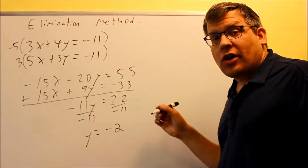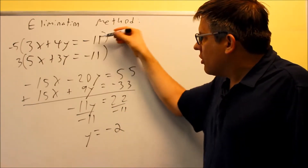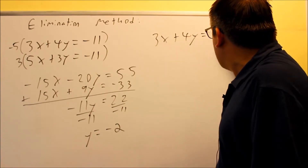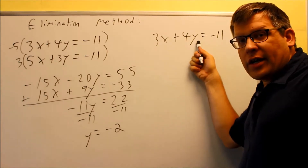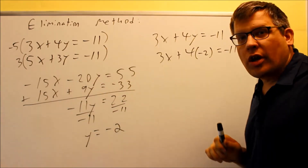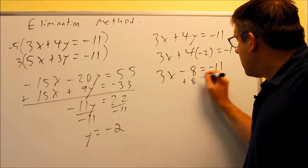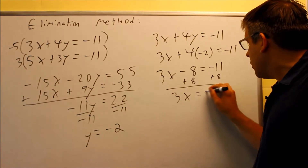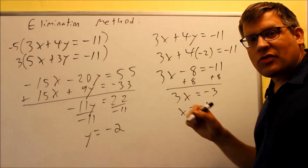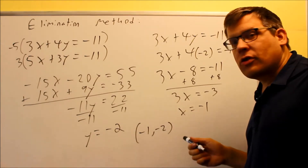Now we need to find the x value. You can use either the first or second equation — plug the y value back in. Using the first equation: 3x plus 4 times negative 2 equals negative 11. That gives 3x minus 8 equals negative 11. Add 8 to both sides: 3x equals negative 3. Divide by 3 and x equals negative 1. Remember the x value comes first, so the answer is negative 1 comma negative 2 — that's the point of intersection.